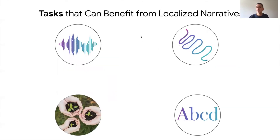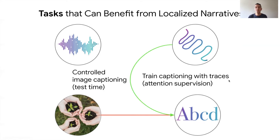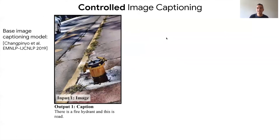Here is a series of tasks that can benefit from localized narratives. From this multimodal data — where an image is associated to audio, a mouse trace, and a text transcription, all three synchronized with each other — the basic task is image captioning going from one image to text. In this case, localized narratives just provide more training data. However, we can make use of the synchronized trace during training of a captioning model, where it provides supervision for the attention mechanism. Or we could use the trace at test time to perform controlled image captioning — and in fact, we implemented such an application.